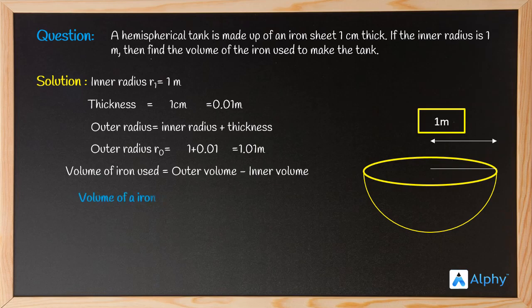So it is actually 2/3 π ro³ minus 2/3 π r1³. We know the values for ro and r1. Before substituting, just see that 2 and π are common in both of them, so we can take that out. The formula is modified like this: it becomes 2/3 π (ro³ - r1³).